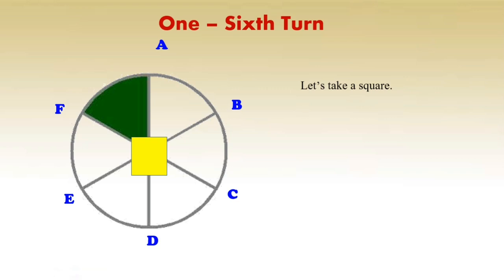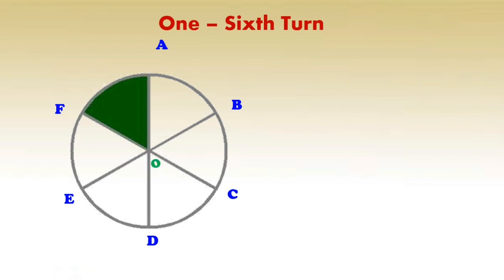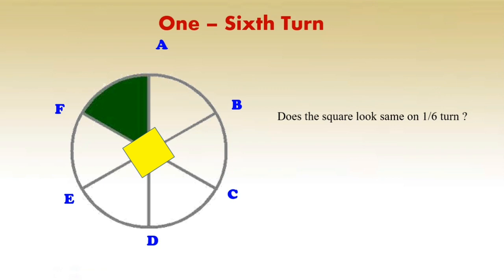Let's take a square. This square is at point A. Now rotate the square from point A up to point B. Does the square look the same on one by six turn? The square doesn't look the same on one by six turn.